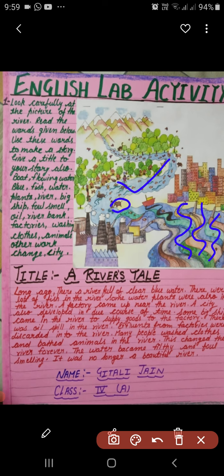The river is getting polluted. You can see small fishes there, then animals, small huts, some birds, and smoke coming out. There is also snow on the mountain peaks.